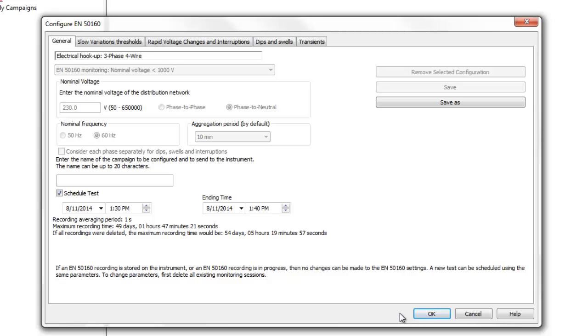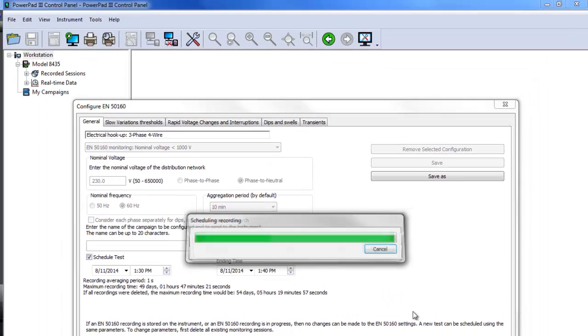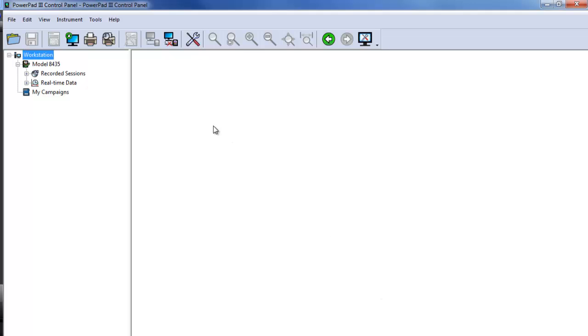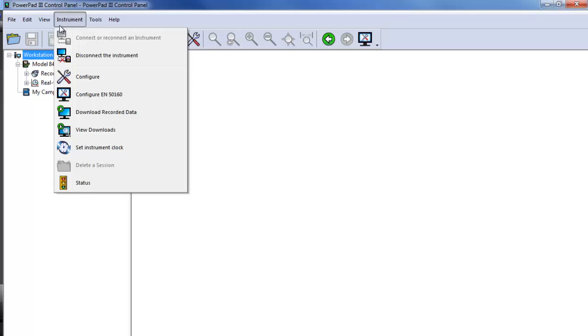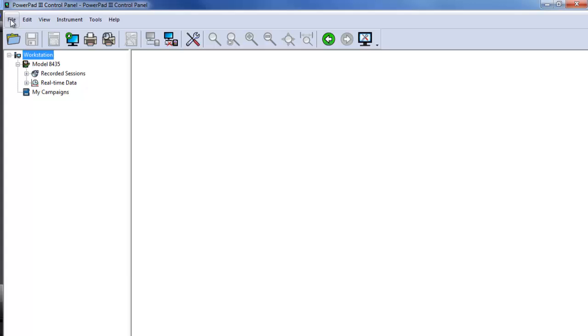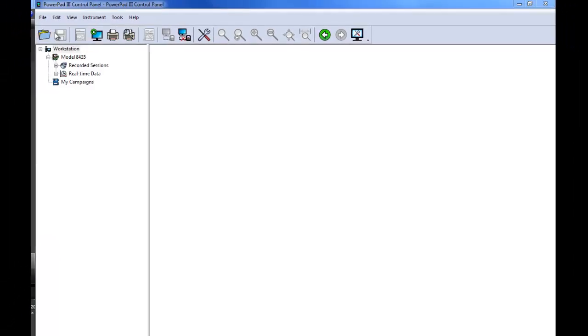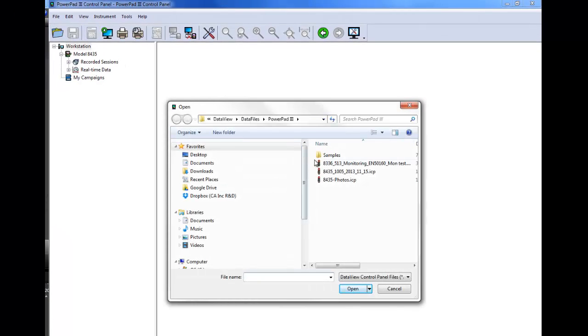To see the results of a completed monitoring session, download the session from the instrument by selecting Download Recorded Data from the instrument menu. Or you can open a previously downloaded session by selecting File from the menu bar and clicking Open. Find and select the monitoring session via the Open dialog.